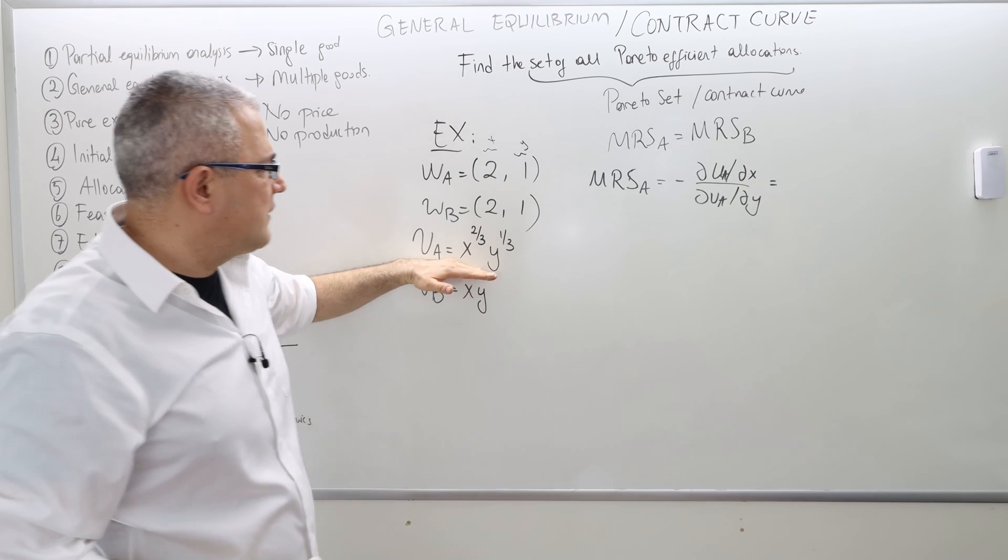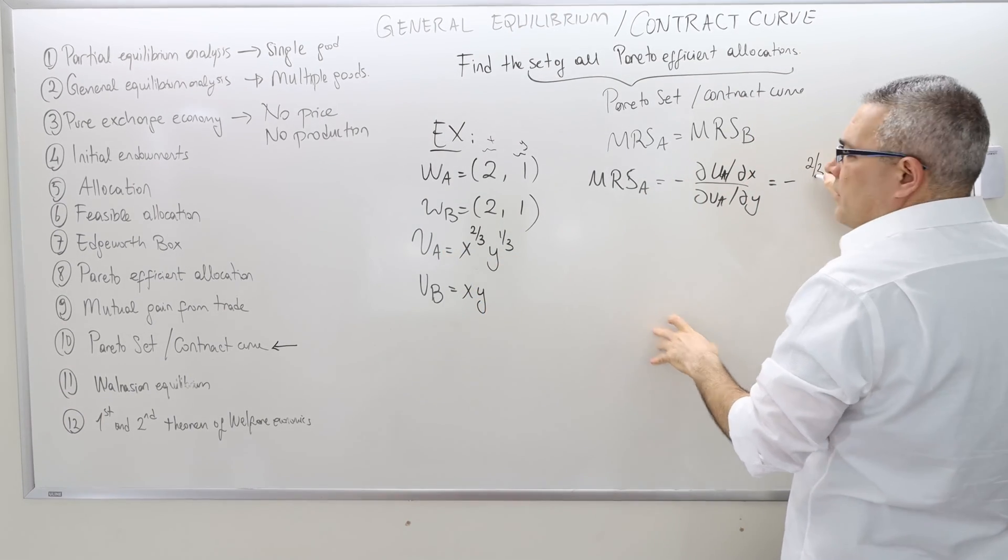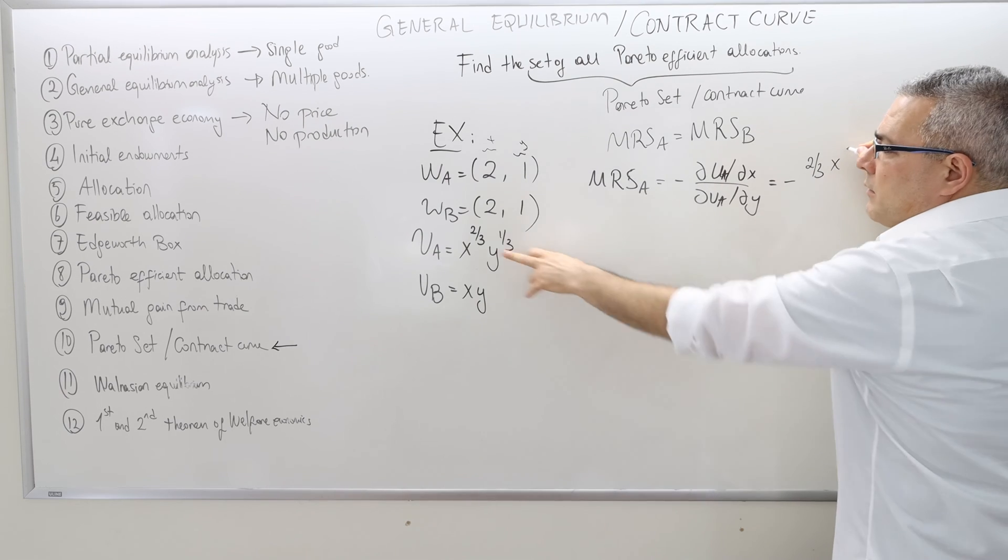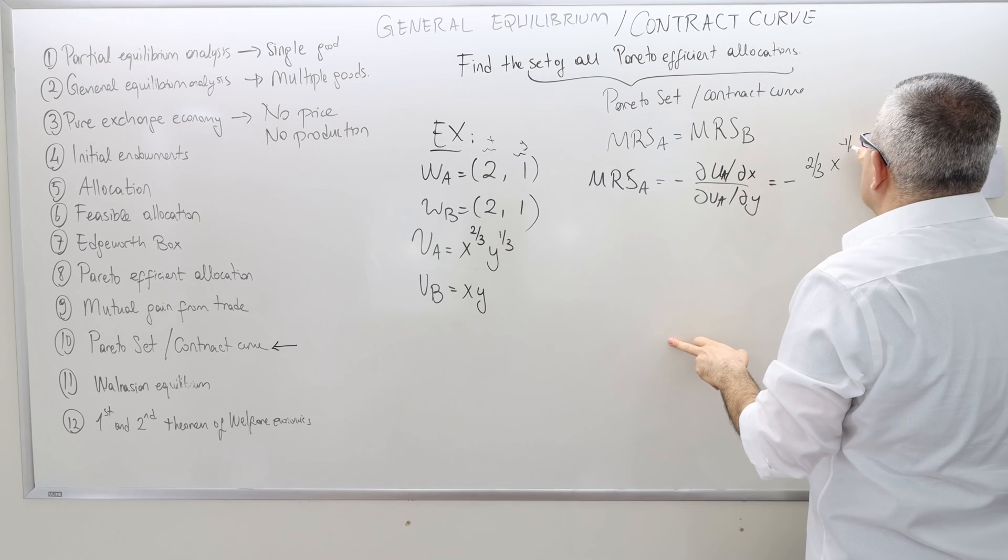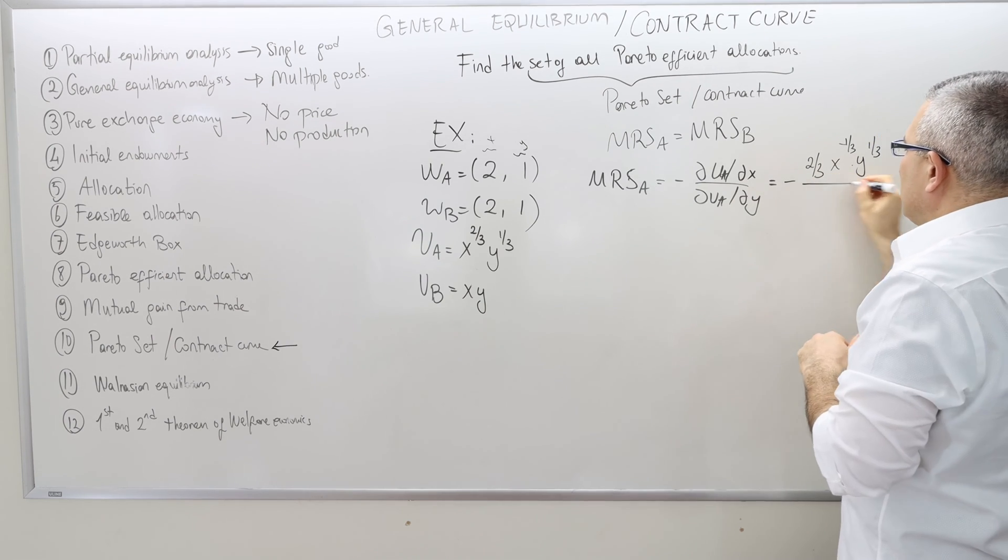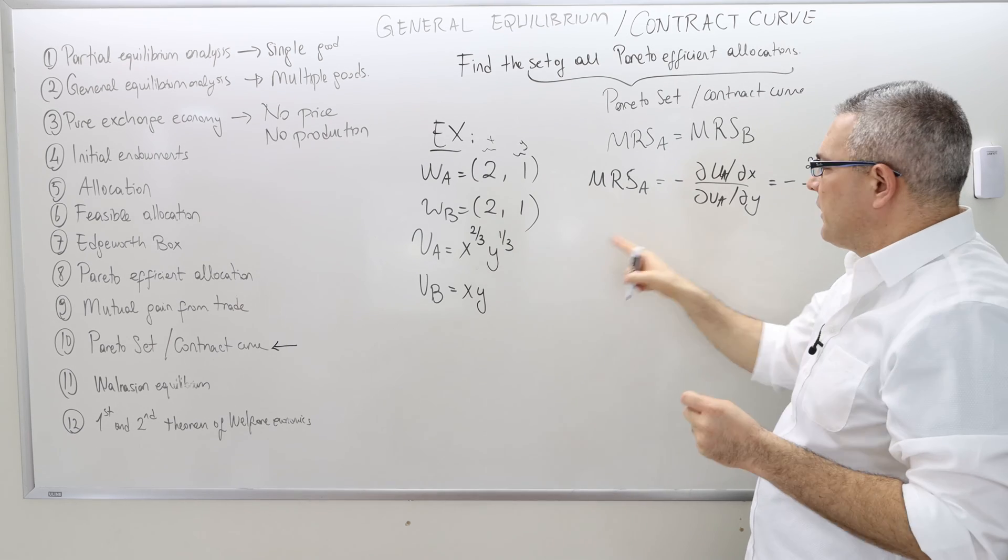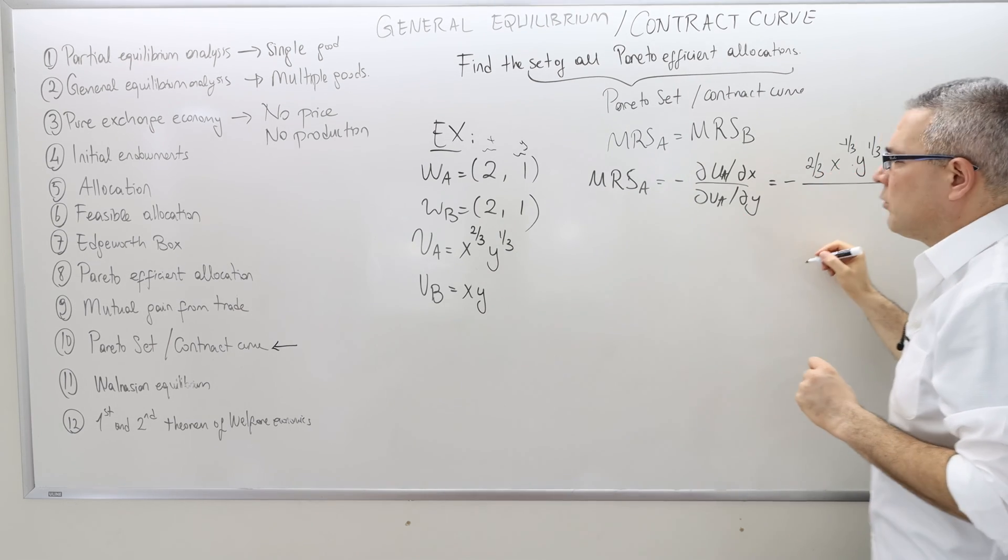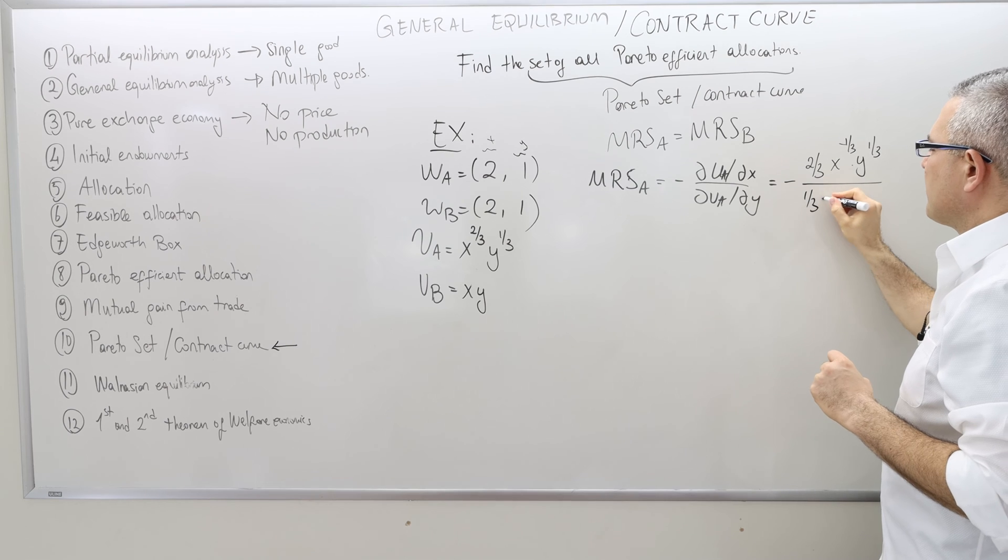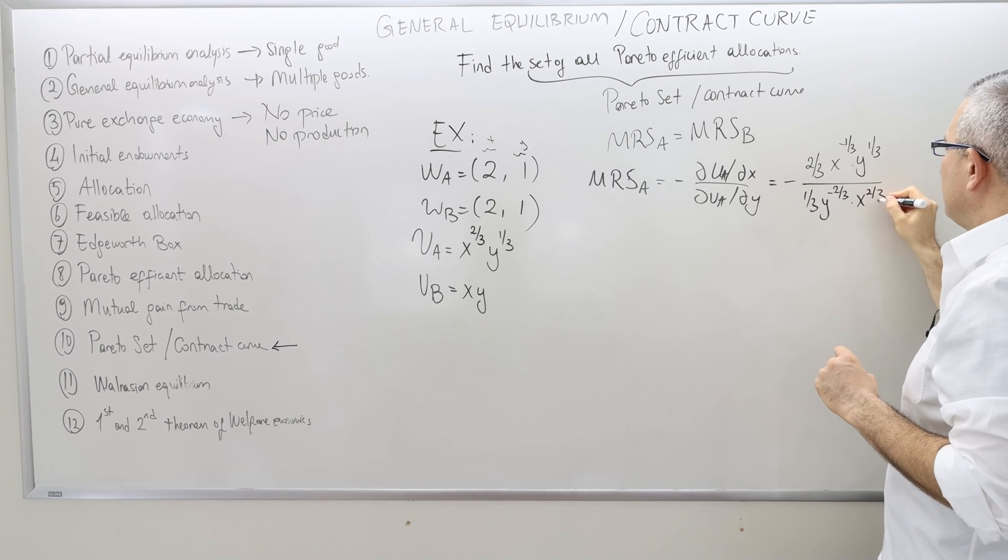So what is the marginal utility with respect to good x? Don't forget the minus. It's 2/3 x to the power minus 1/3 times 1 over y to the power 1/3. What is the partial derivative with respect to y? It's 1/3 y to the power minus 2/3 times x to the power 2/3.